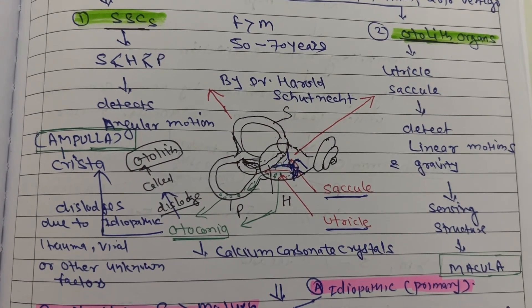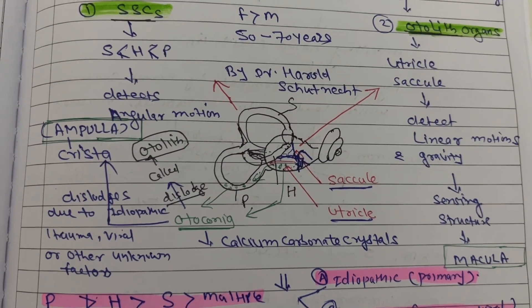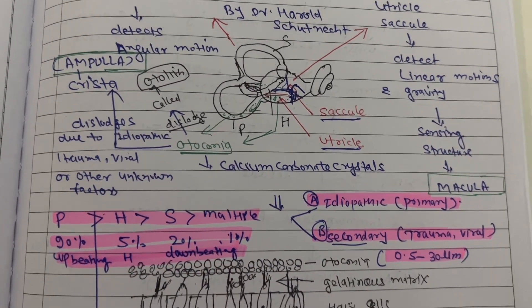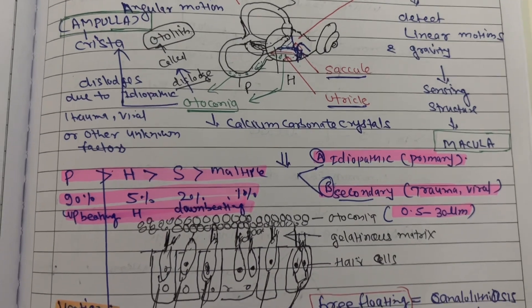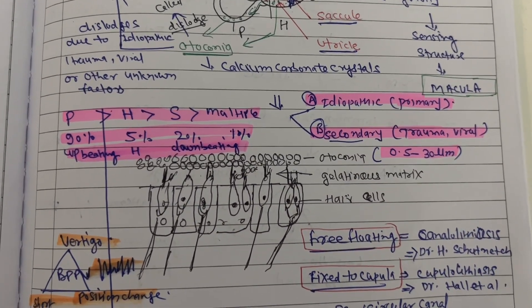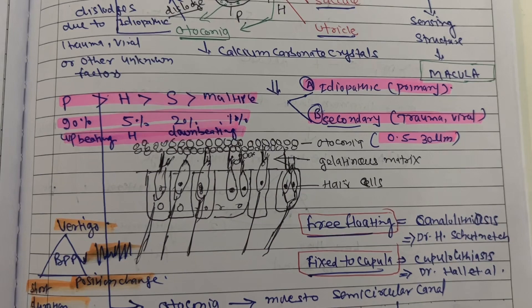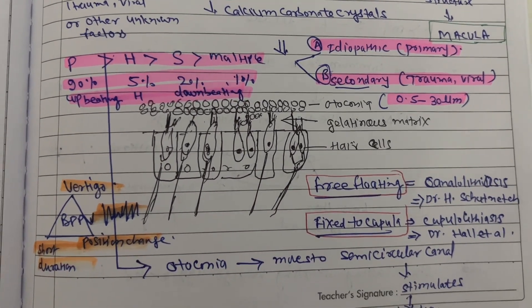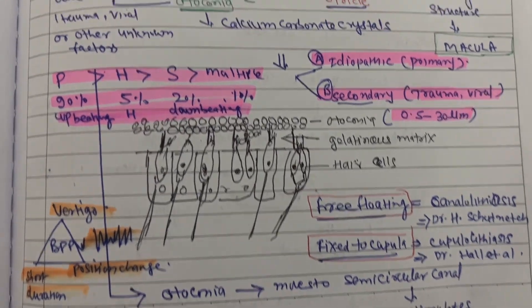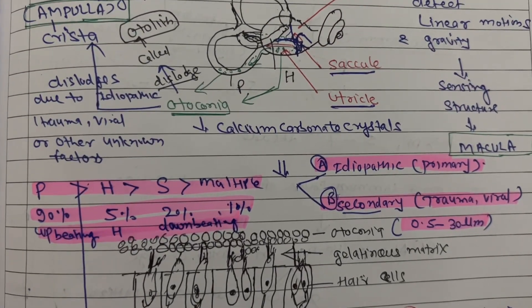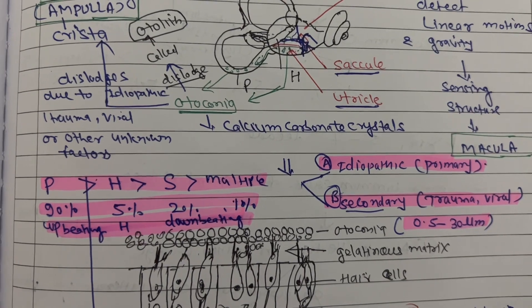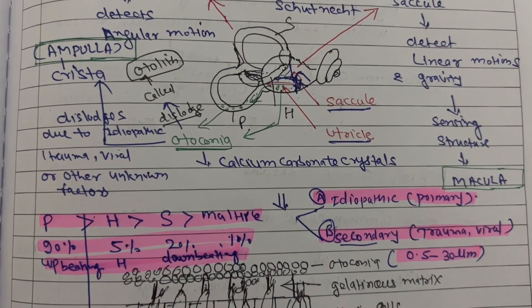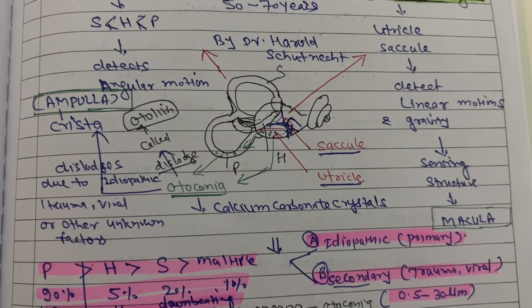BPPV occurs because of stimulation of the kinocilium of the hair cells, which ultimately stimulates the vestibular nerve, leading to vertigo. These otoconia are calcium carbonate crystals in an abnormal position leading to vertigo. BPPV is of two types: idiopathic or primary, where no reason is found, and secondary, because of trauma or viral infection. The otoconia size is about 0.5 to 30 micrometers.